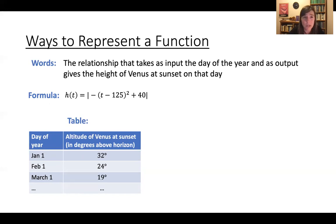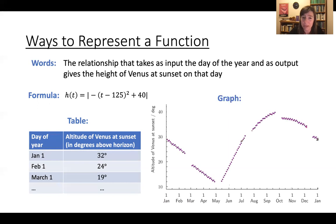And then the last way to represent a function is through a graph. And this happens to be the graph of the altitude of Venus at sunset at different times of the year. Like I said, I like astronomy. I was given some feedback in the past that maybe this is too esoteric for math 110. But I love astronomy. Maybe some of you do too. And yeah, I think this is cool. This is like, some astronomers really created this graph and this table of this function.